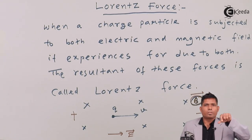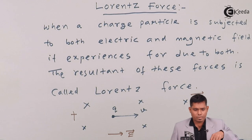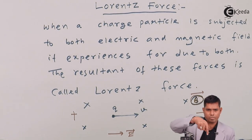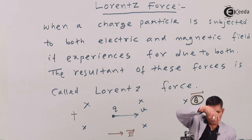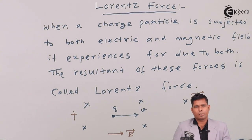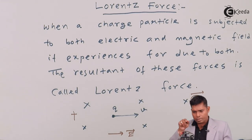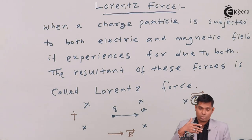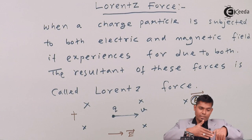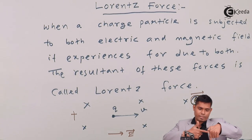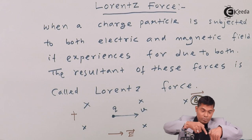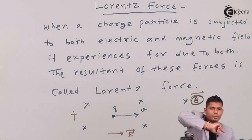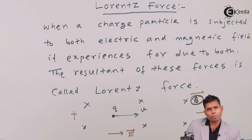And what is the plane in which this is moving? The plane is this. So as you see, the plane will be this. The magnetic field is perpendicular. The velocity is in this direction. So the plane in which the magnetic field and the velocity lies is this plane. And the plane in which the particle is moving is this plane. Both the planes are perpendicular.